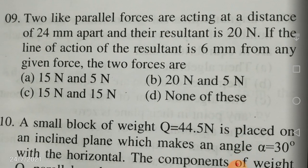Two parallel forces are acting at a distance of 24 mm apart and their resultant is 20 Newtons. If the line of action of the resultant is 6 mm from any given force, draw a figure with two arrows — the distance between them is 24 mm. Because the resultant is 6 mm from one force, the distance to the other force is 18 mm. Let the top force be P at 18 mm and bottom force Q at 6 mm. So P into 18 should equal Q into 6, which gives Q equal to 3P.